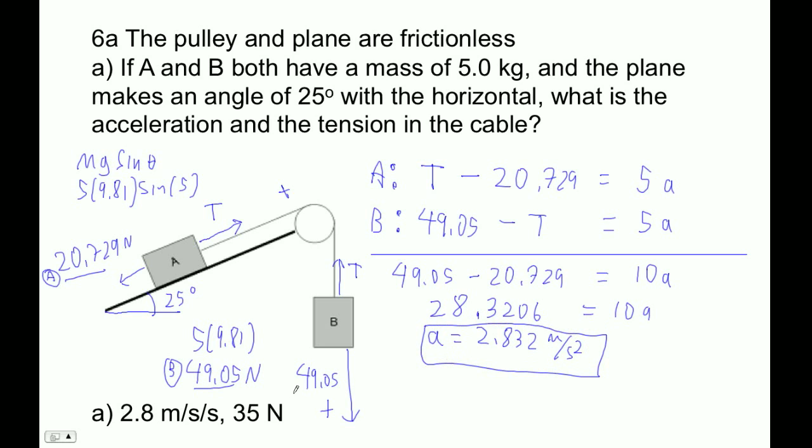Now we've got to find out what the tension is. So I think the thing to do is to take this formula here and rewrite it this way. T is equal to 5A plus 20.729. So now we're set. T is equal to 5 times the acceleration, 2.832, plus 20.729.